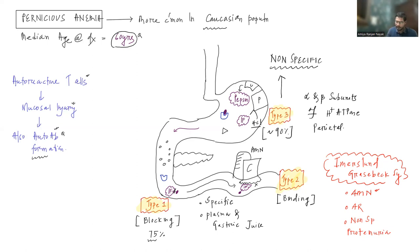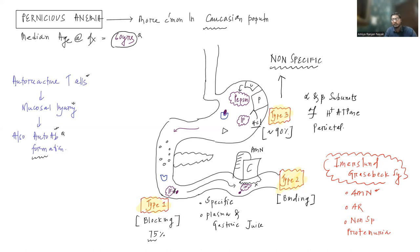So nothing to do with Pernicious Anemia — this is another cause of B12 deficiency mentioned as an addition. To summarize the antibodies: we discussed autoreactive T cells and antibody Types 1, 2, and 3. These antibodies help in the diagnosis of Pernicious Anemia. Type 1 and 2 are specific; Type 3 is non-specific and can be found in any condition of atrophic gastritis.